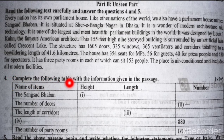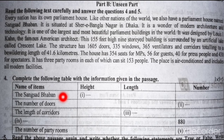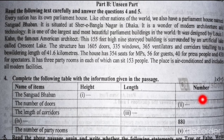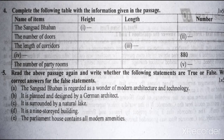Question 4: complete the following table with the information given in the passage. Items: name, height, length, number. Number one — the Jatiya Sangsad Bhaban; number two — the number of doors; number three — the length of corridors; number four — the number of seats; number five — the number of party rooms.